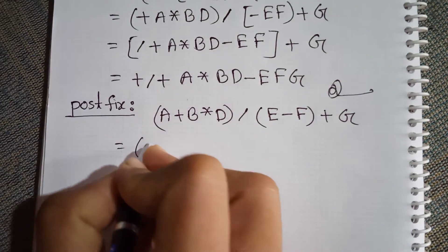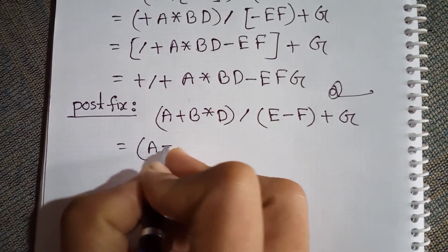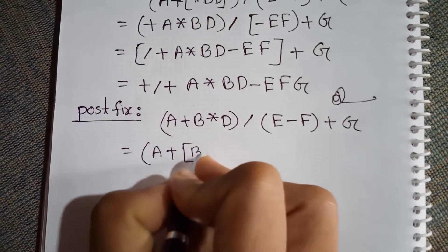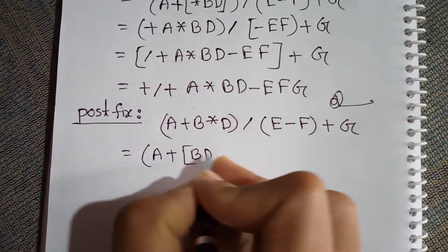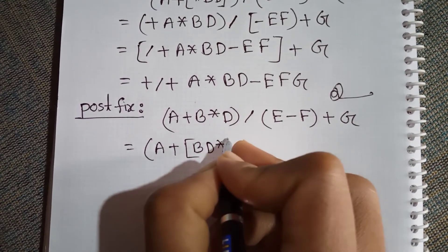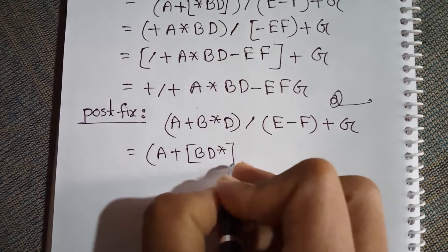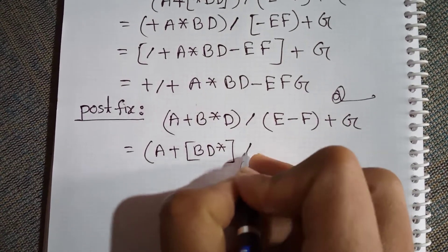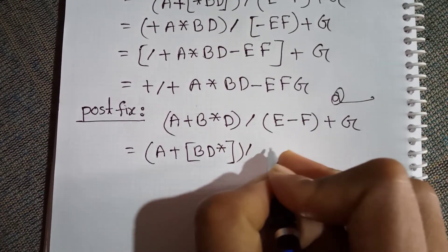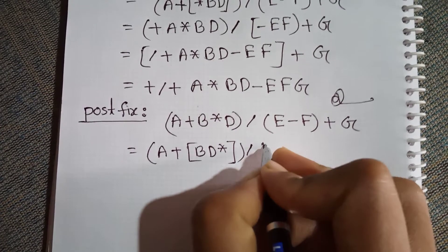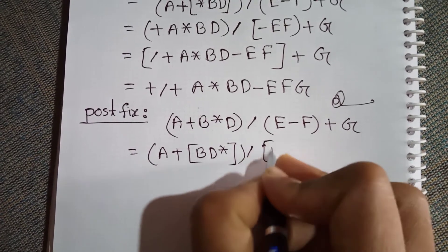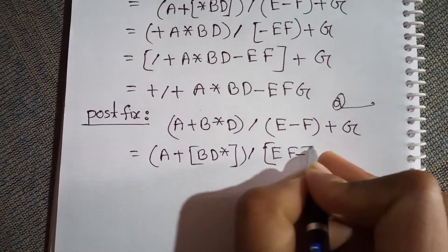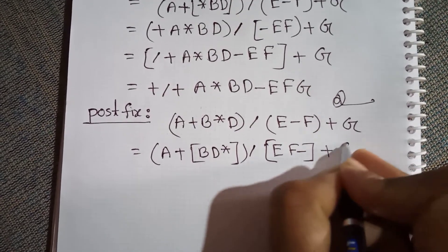For postfix expression, we write A plus B D into — we need to do the multiplication first because it gets more priority than plus — then E F minus plus G.